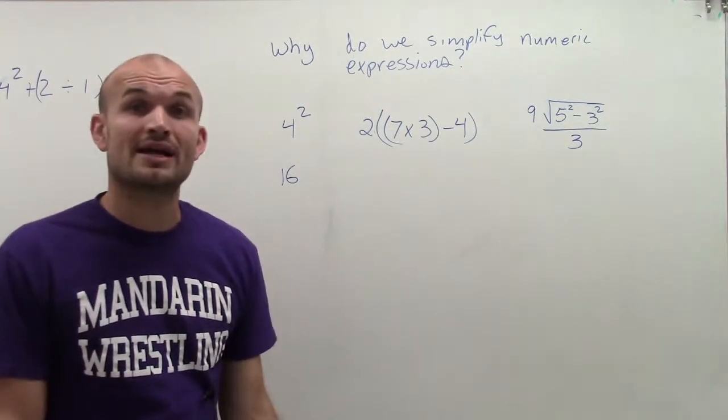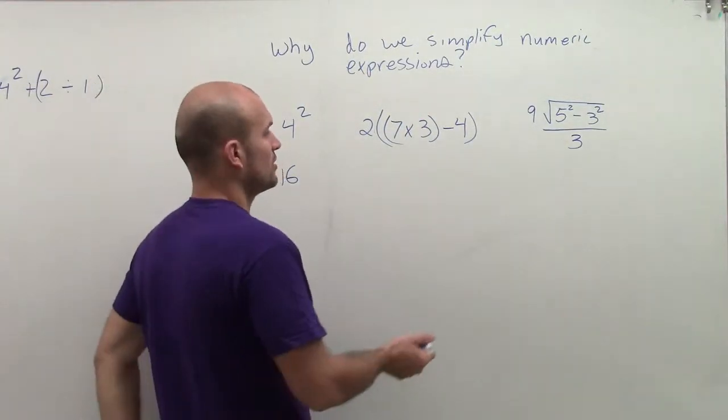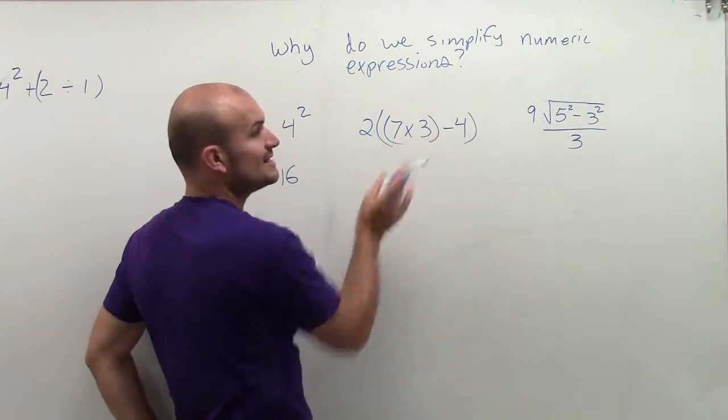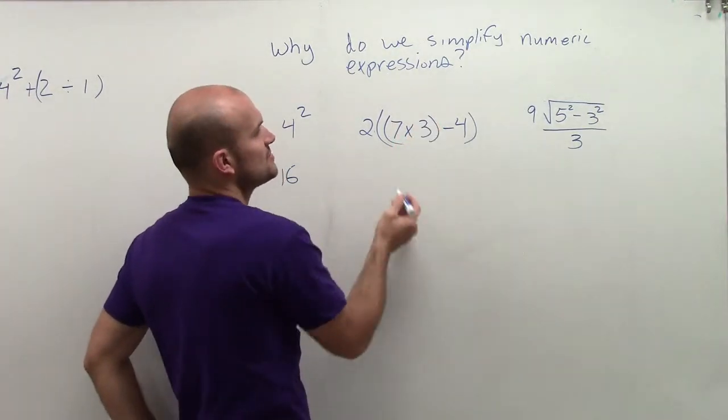Here, I'm going to have to use my order of operations, or my PEMDAS, which I've previously spoken about. So here, I'm going to use the inside parenthesis first. 7 times 3 is 21.